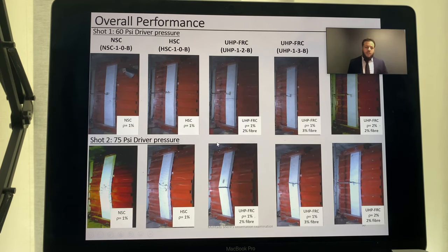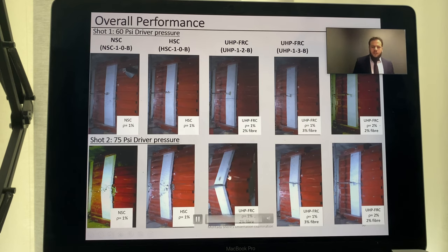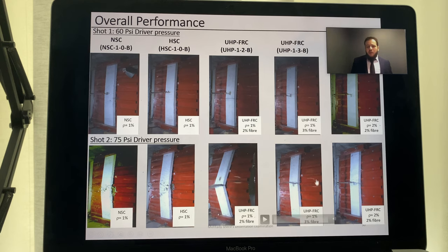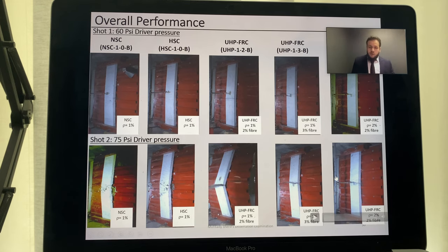Under the second shot, the two traditional concrete specimens failed in compression-controlled failure with significant fragmentation. The UHPFRC specimen with 1% reinforcement and 2% fiber experienced an undesired brittle failure with bar rupture and higher displacement. Increasing fiber content to 3% produced the same bar rupture but with less violent failure and better ductility. The specimen with 2% steel reinforcement showed even better performance and lasted one additional shot.